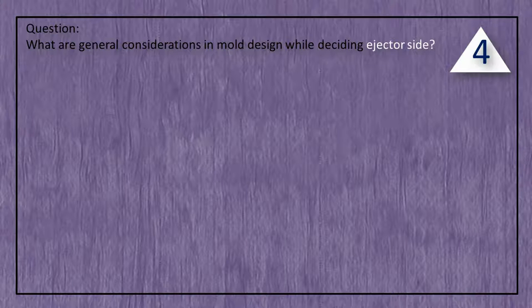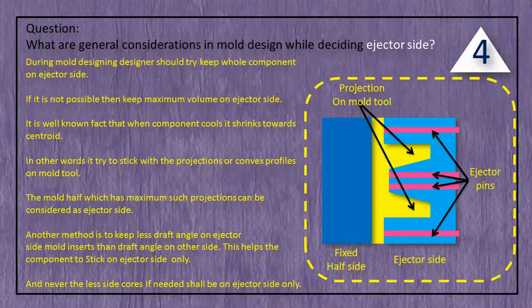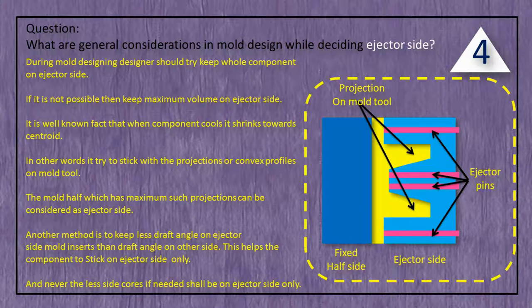Question: What are general considerations in mold design while deciding ejector side? Answer: During mold designing, the designer should try to keep the whole component on the ejector side. If it is not possible, then keep maximum volume on the ejector side. It is a well-known fact that when a component cools, it shrinks towards the centroid — in other words, it tries to stick with the projections and convex profiles on the mold tool.